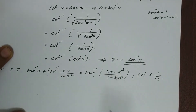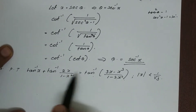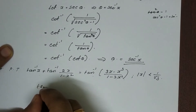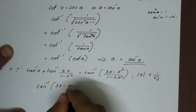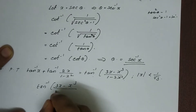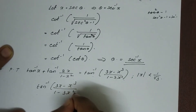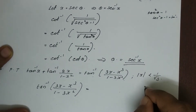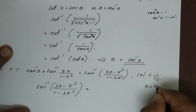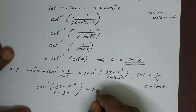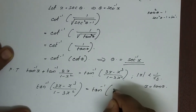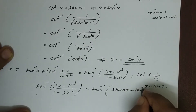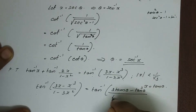We will prove that this is equal to this. I will prove that tan inverse 3x minus x cubed divided by 1 minus 3x squared is equal to tan inverse 3x. Then I will prove that tan inverse 3x minus x cubed divided by 1 minus 3x squared equals tan inverse 3x squared.